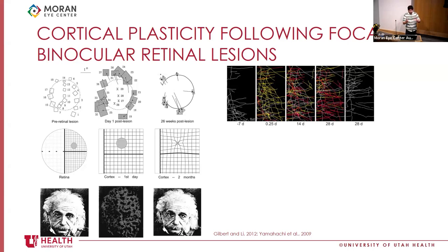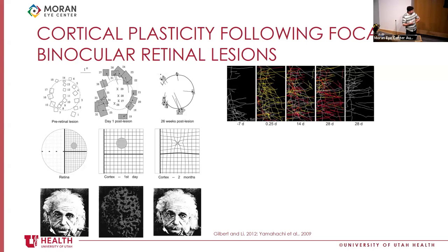In Gilbert's model, the retinal lesion produces a scotoma — a region in the cortex with no visual map representation — and over time the representation stitches together, producing a warping of the visual field. Computer simulations showed that if you degrade an image of Einstein by punching holes in the retina, plasticity can stitch together those holes and infer what the image should look like, recovering much visual function even though the image is now distorted.